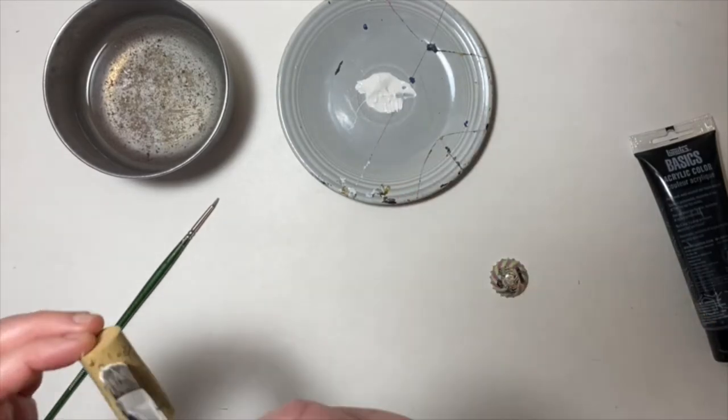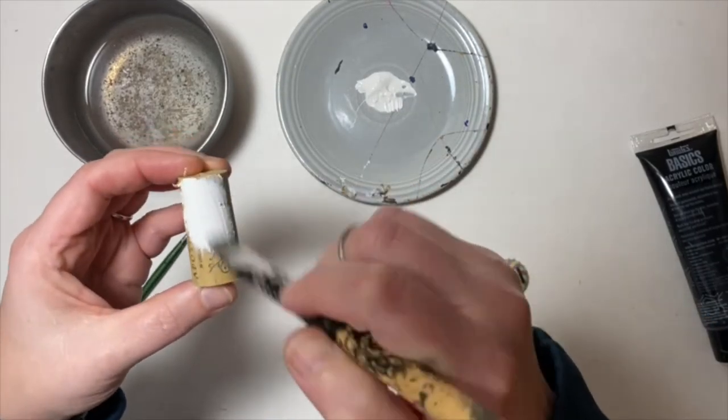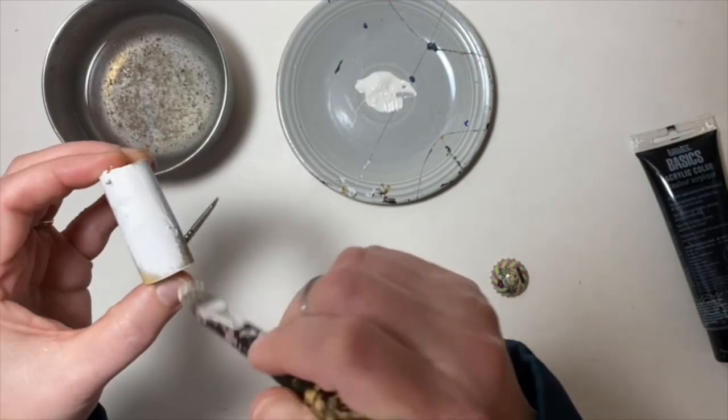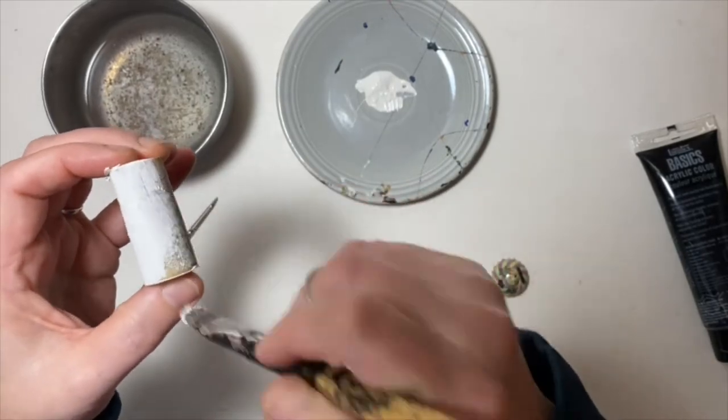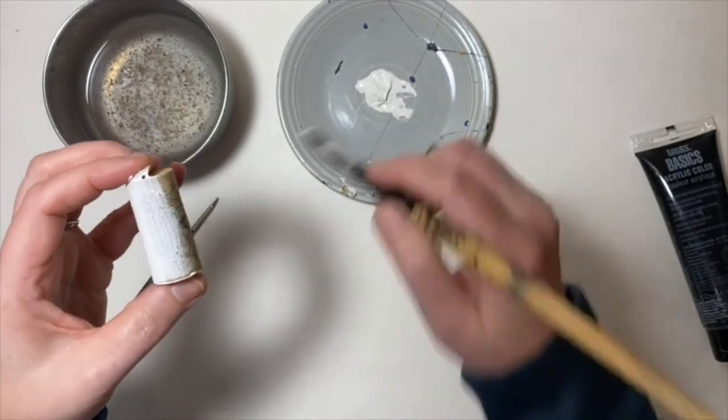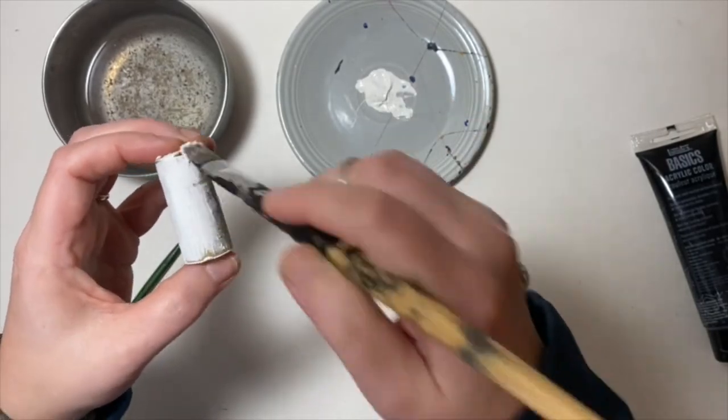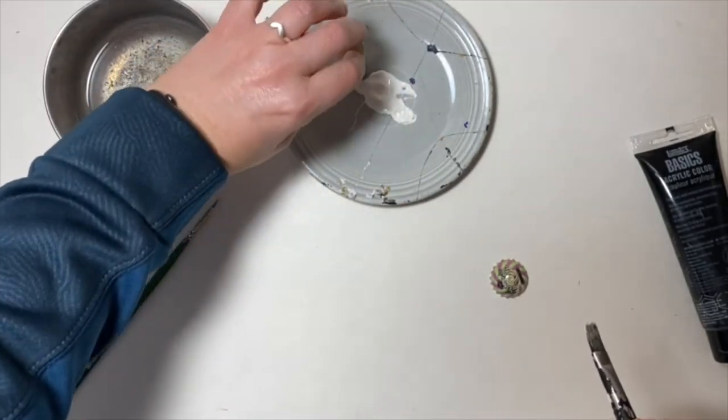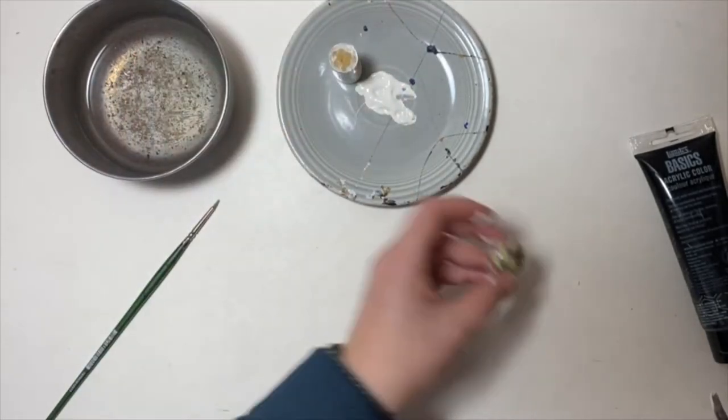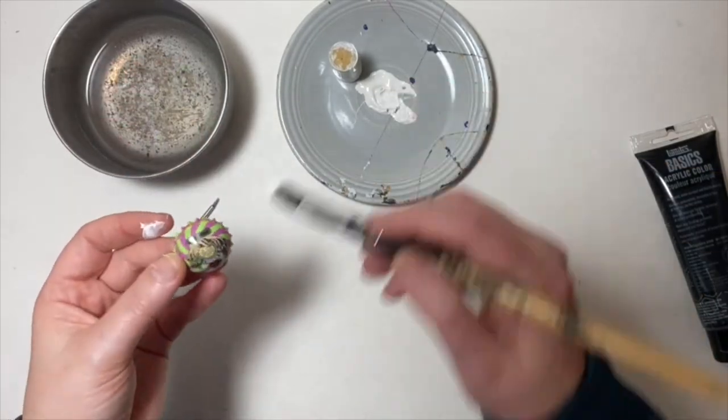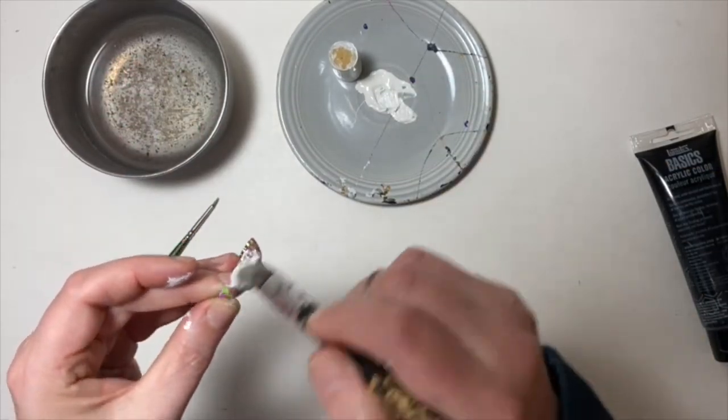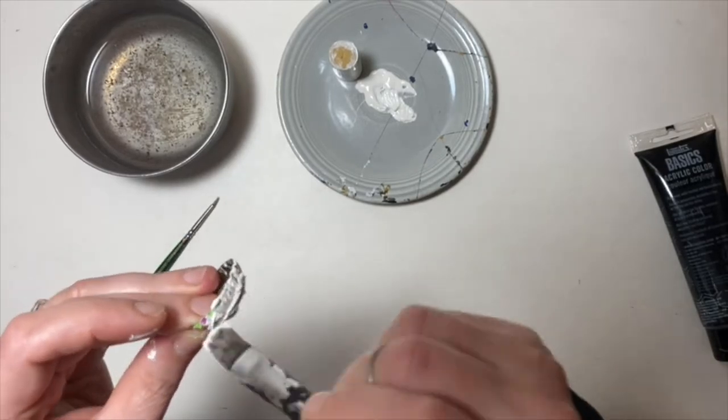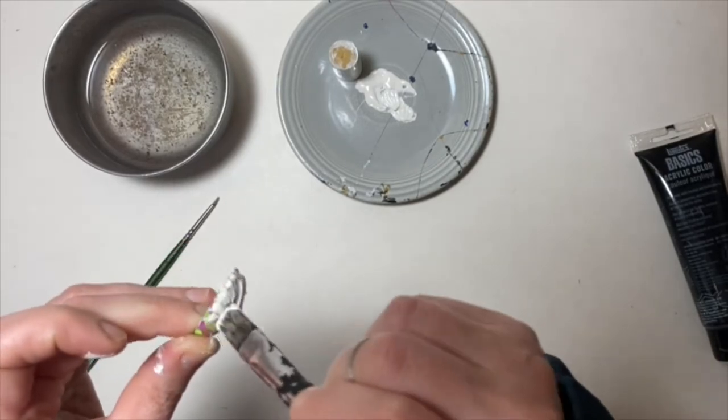But if you're in a pinch you can just use regular white acrylic paint and you're just going to cover all of your cork. Set that aside and then take your bottle cap and cover it as well. Once you have that, just let it sit and dry before you move on to the next step.